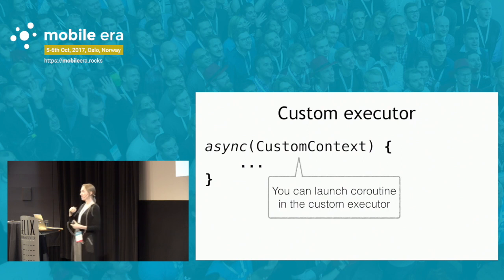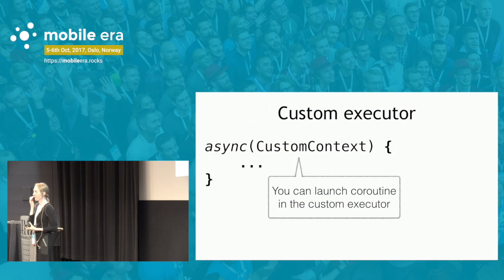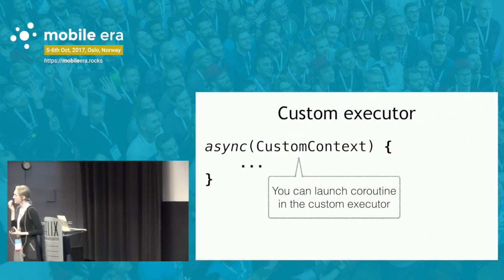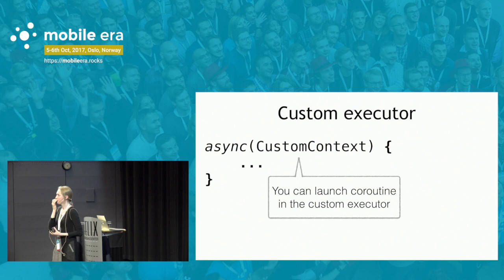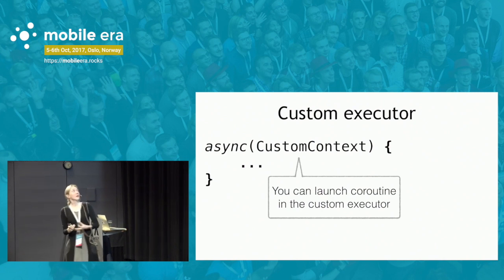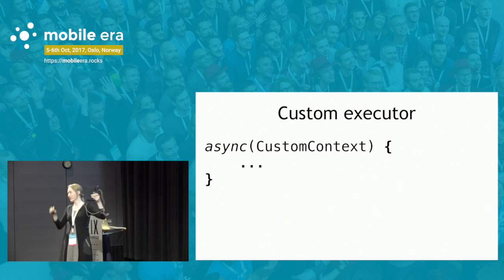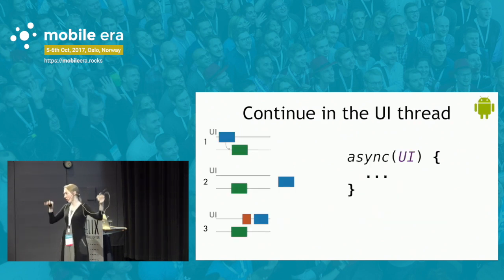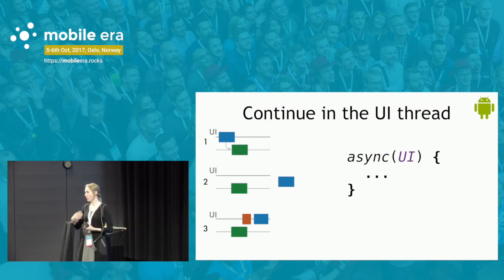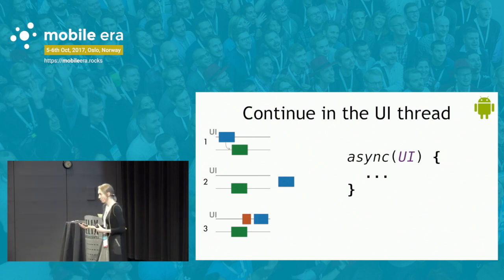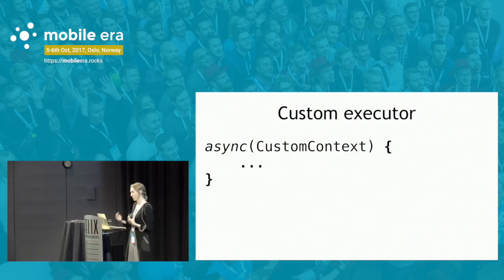You can also provide a custom context — the system is quite flexible. If you need to, you can provide a custom context specifying where your coroutines may be executed. A question from the audience: can the context be set dynamically at runtime? Yes — the UI context is just a variable, defined as a library construct, and you may store it in a variable and change it while you execute your code, depending on your needs.